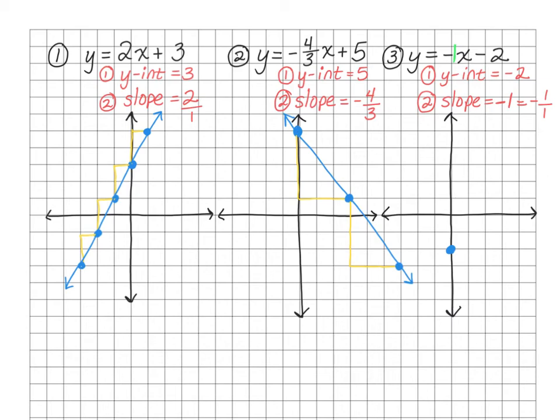So the slope is negative 1 over 1, heading in a negative direction. If I go up 1, I have to go to the left to make it a nice negative slope. I continue with my slope as far as I can go on the graph. Once you have all your points, go ahead and connect them — and don't forget to put arrows on the ends.